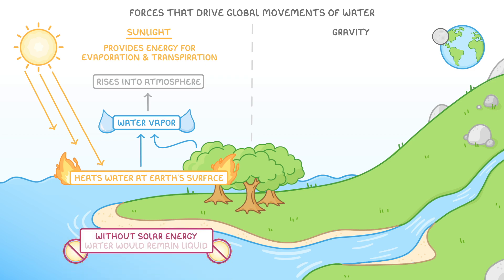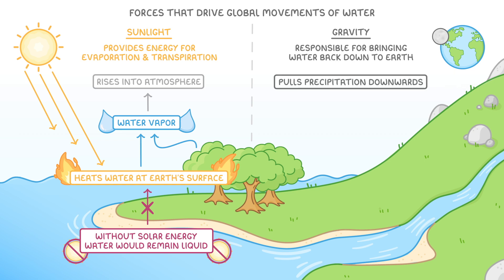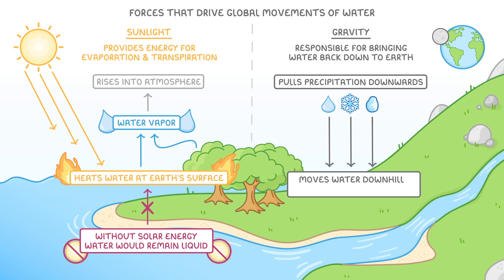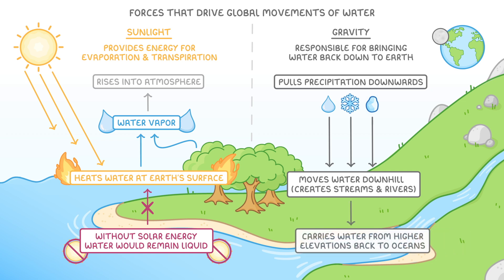Without this solar energy, water would remain liquid and the cycle couldn't continue. Gravity, on the other hand, is responsible for bringing water back down to earth. It pulls precipitation downwards as rain, snow, or hail, and then continues to move water downhill across the land's surface. This downhill flow creates streams and rivers that carry water from higher elevations back to the oceans, restarting the cycle all over again.